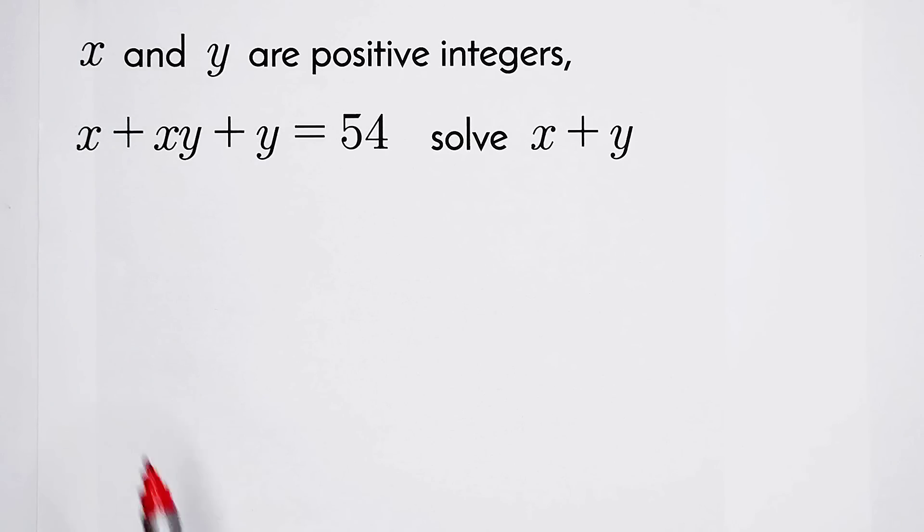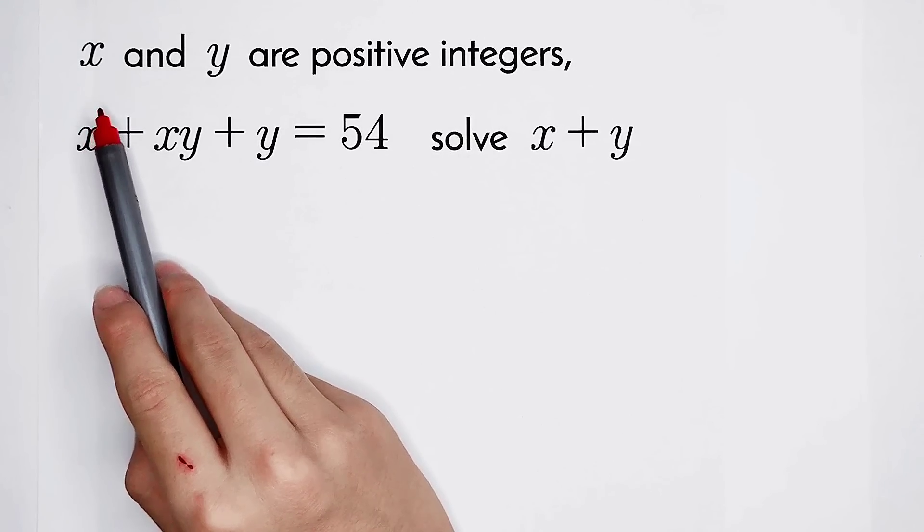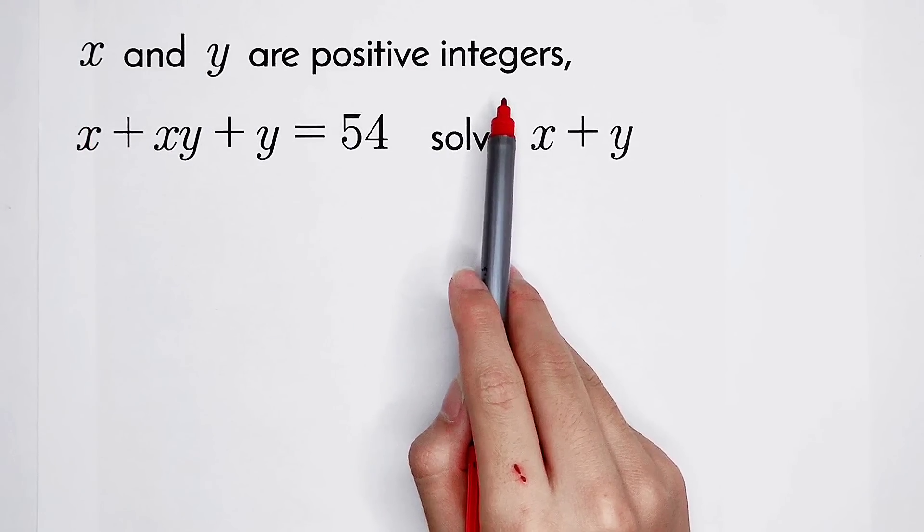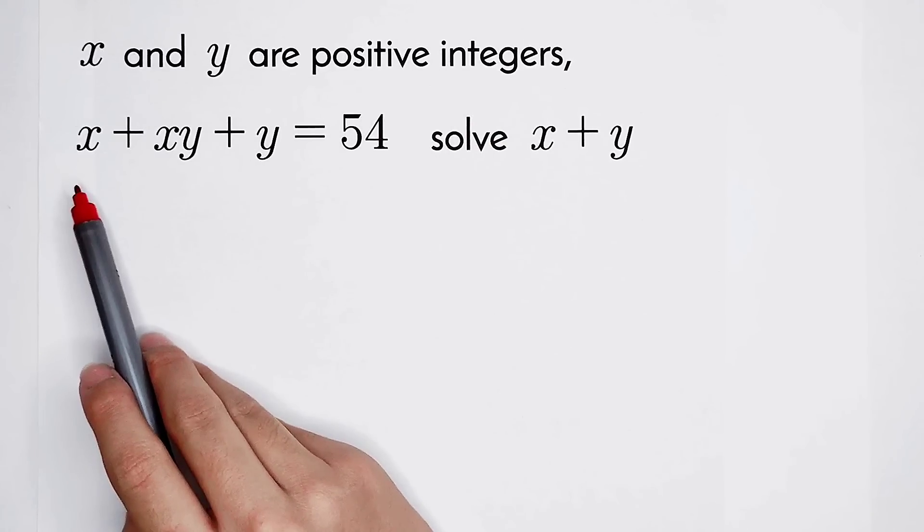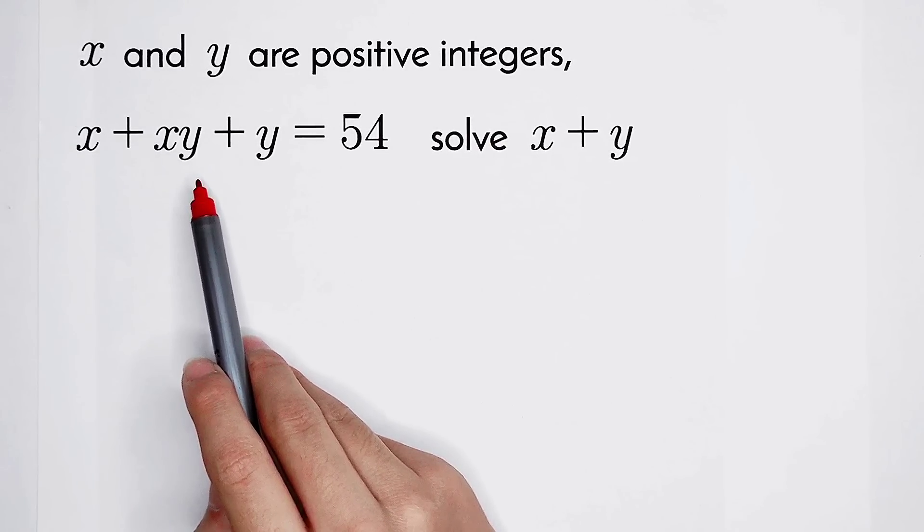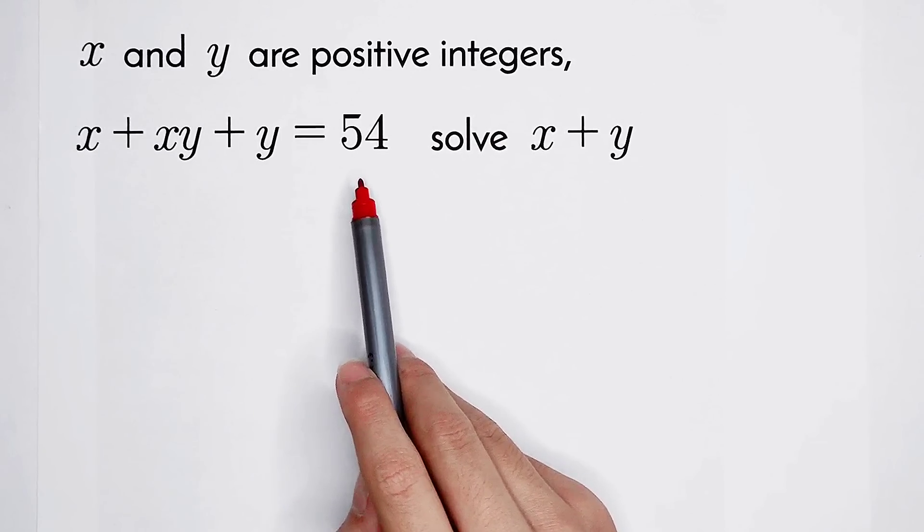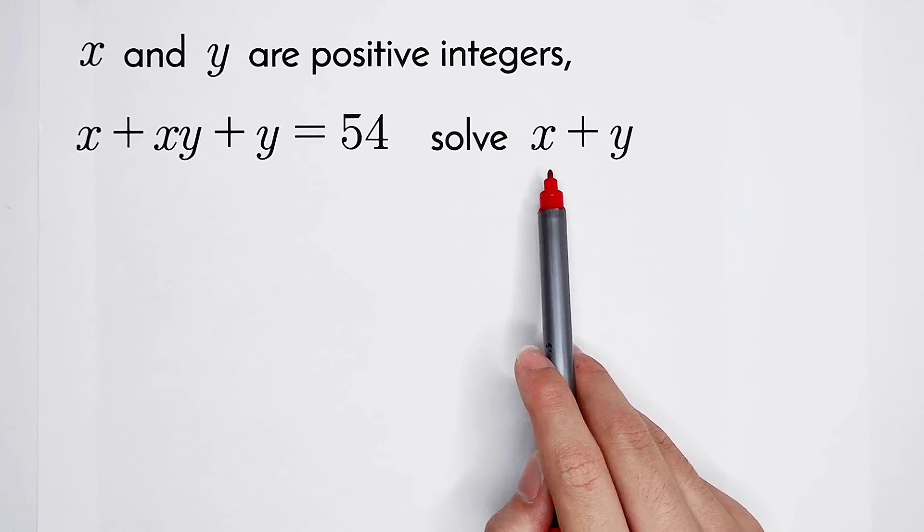Welcome to Math We Know. We're given x and y are positive integers, and we're also given that x plus xy plus y equals 54. Then we have to solve the value of x plus y.